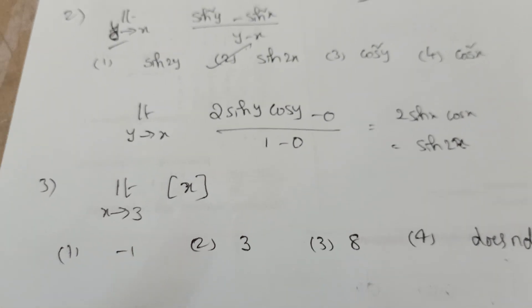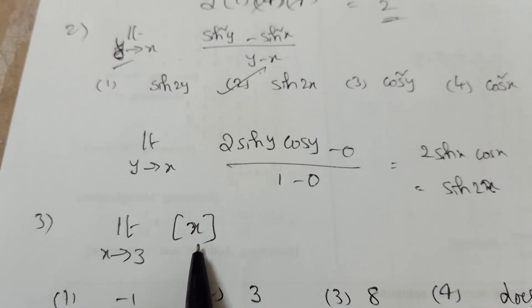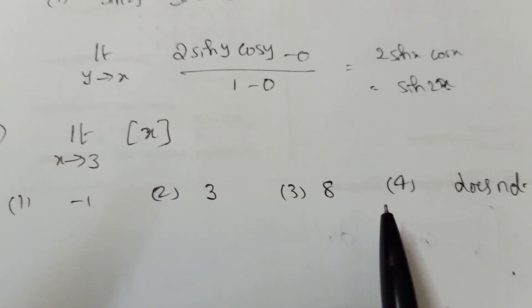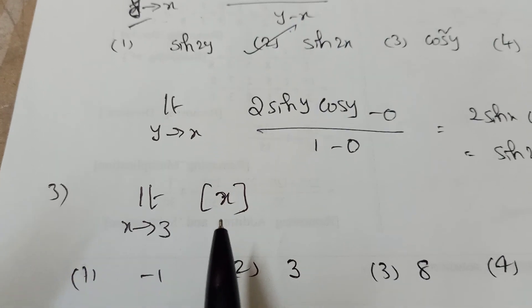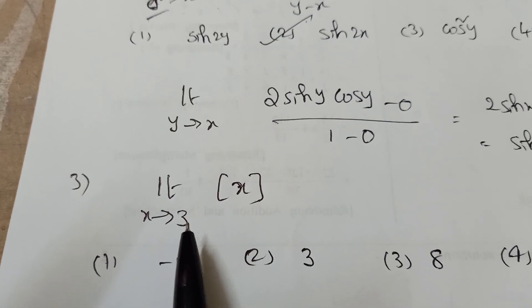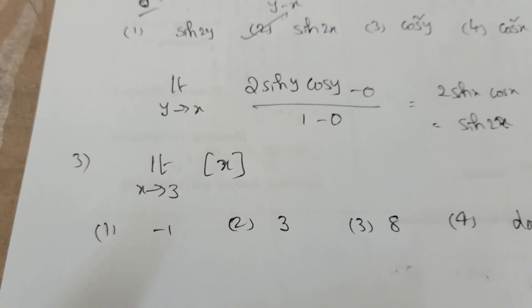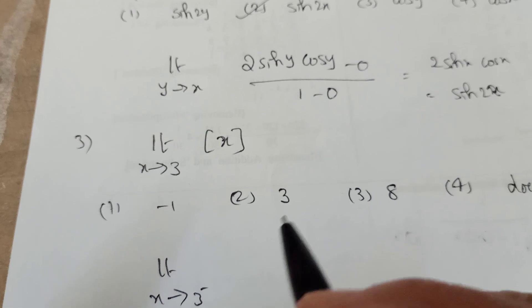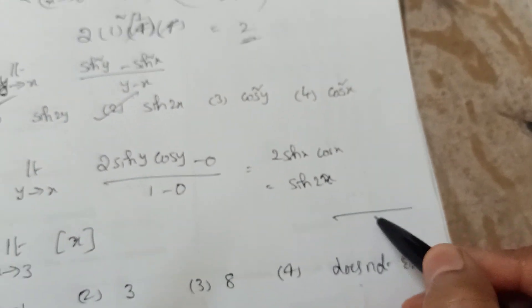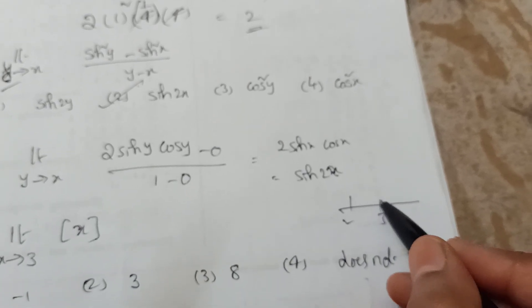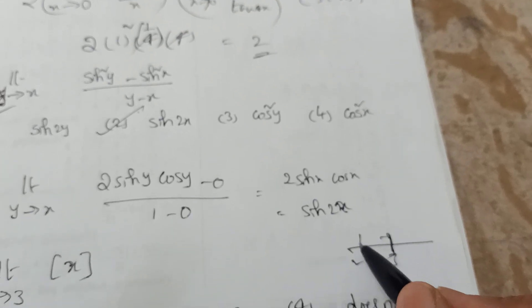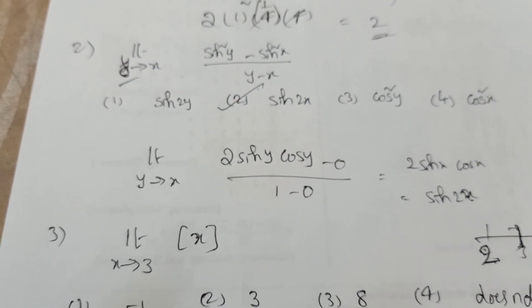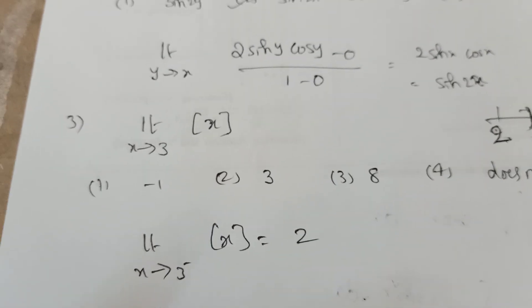Third problem: limit x tends to 3 of the greatest integer function [x]. Options: −1, 3, 8, does not exist. For greatest integer (floor) functions, you must find both the left-hand limit and right-hand limit. For the left-hand limit, x tends to 3⁻, meaning values just less than 3, so the greatest integer is 2.